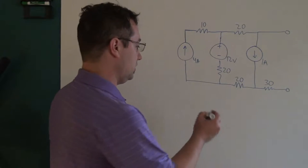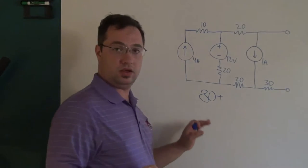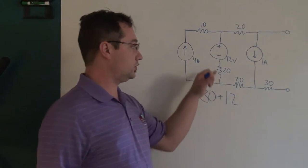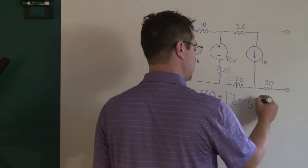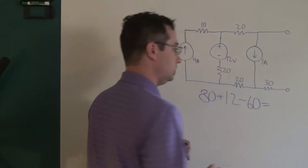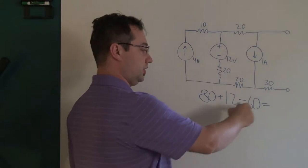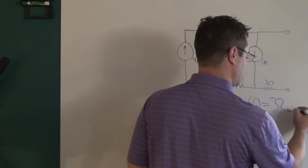Now that we have the three superposition open circuit voltages figured out, all we have to do is add them up. What we get is 80, which was from our 4-amp source, plus 12, which was from our voltage source, minus 60, which was from our final current source. When we add all of these up, our open circuit voltage is 32 volts.